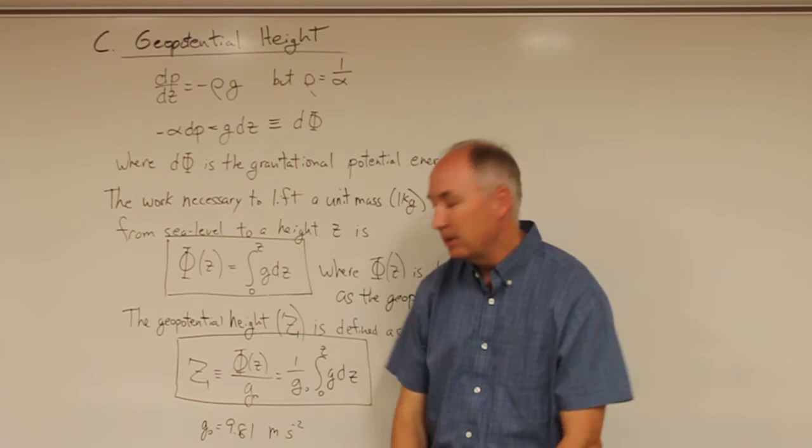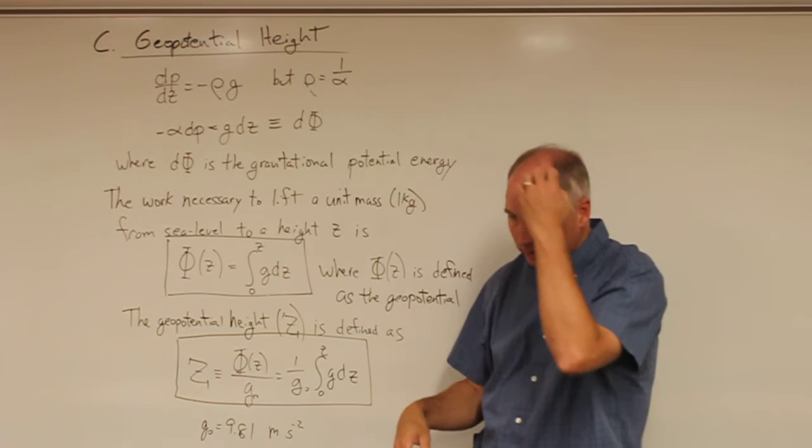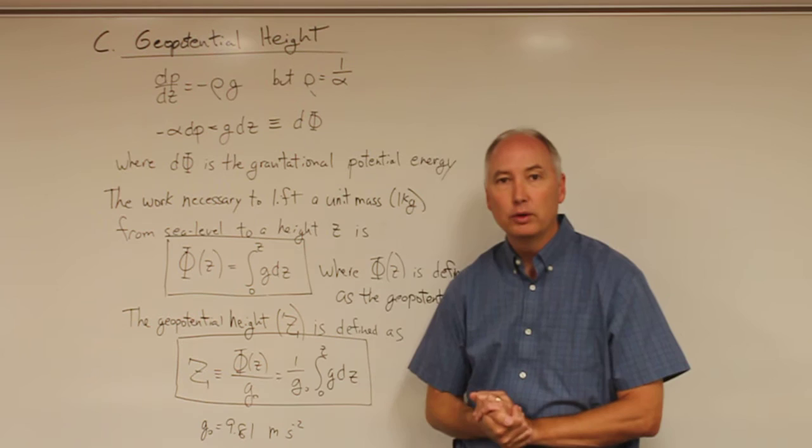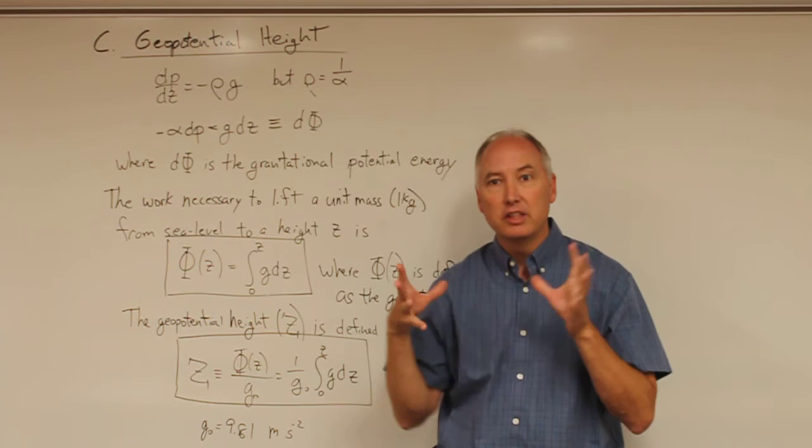But gravity changes with height, so what we've done is taken a more accurate view of the gravitational potential energy and folded that into a redefinition of the height. If we lift an air parcel to one kilometer and assume constant gravity, the gravitational potential energy would be in error.